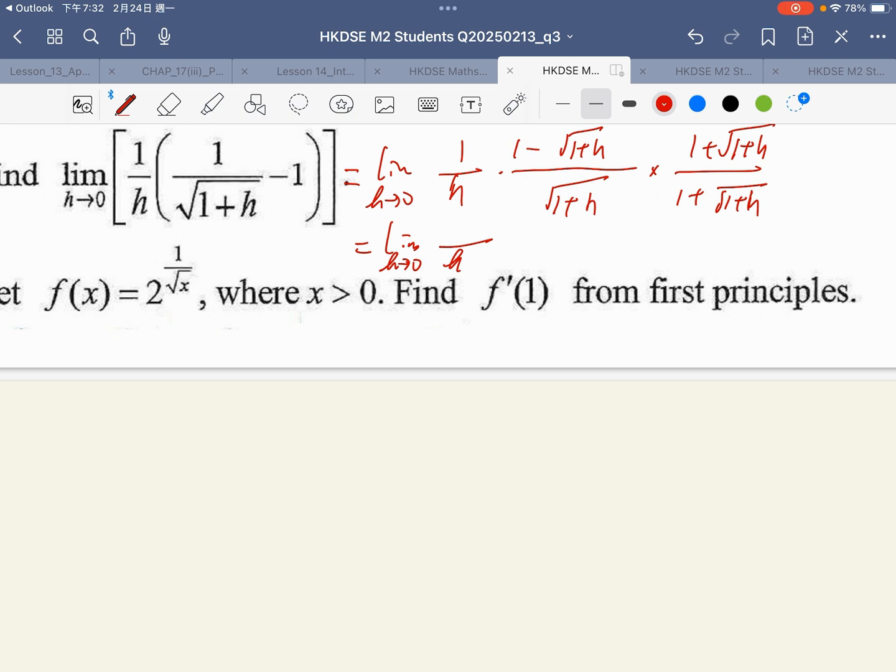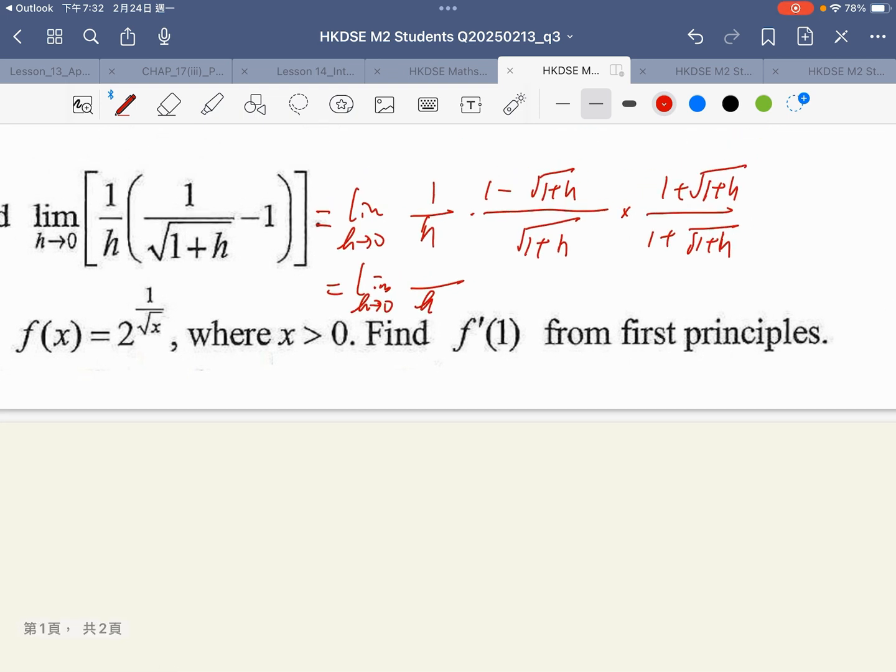For the denominator, it is square root of 1 plus h times 1 plus square root of 1 plus h. For the numerator, it is 1 minus 1 minus h, which simplifies to negative h. Then cancel the h.